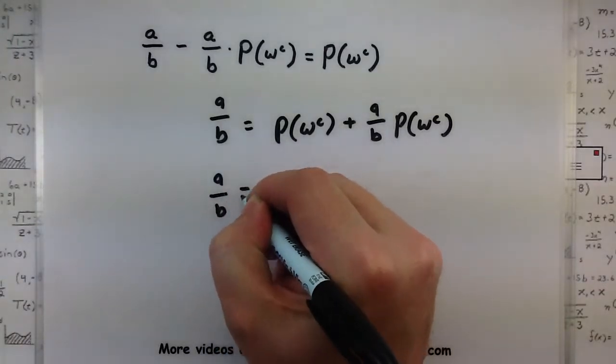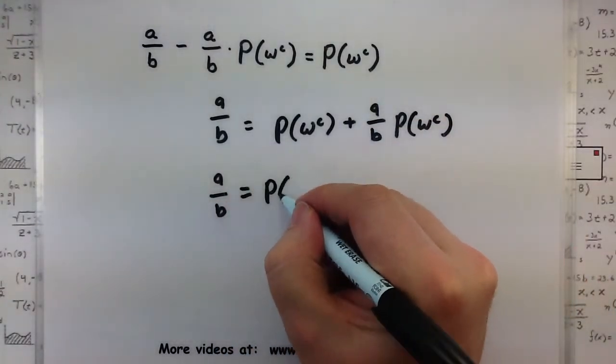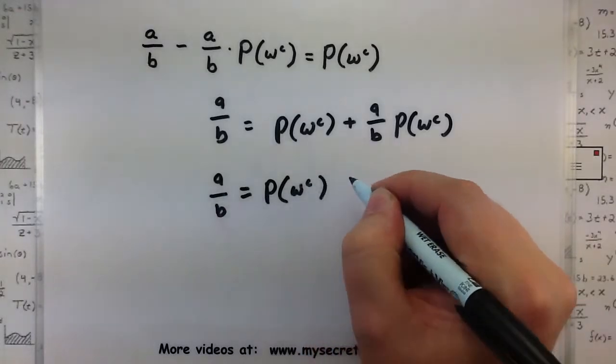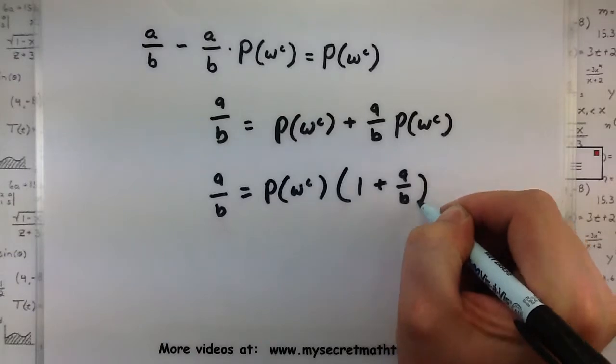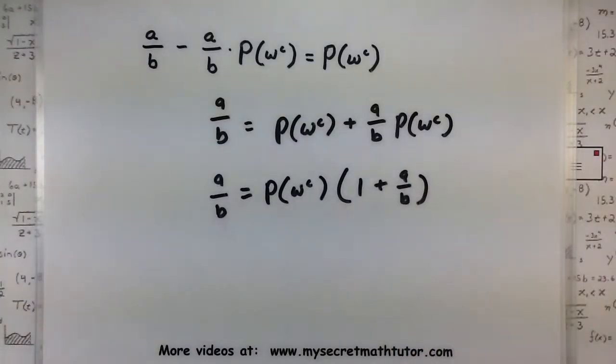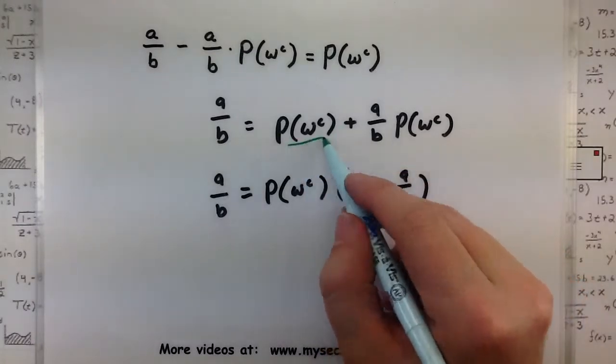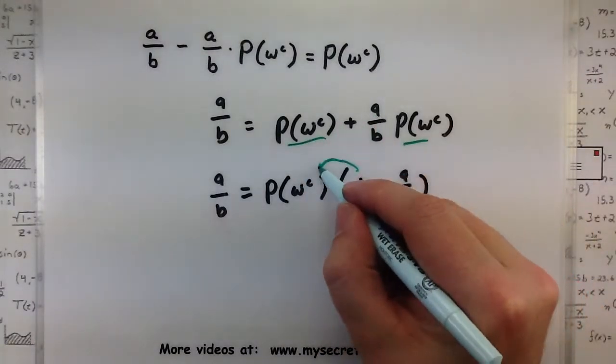Plus A/B. There we go. And now notice how this piece is common to both of our terms. And since it's common, we can go ahead and factor it out from both.